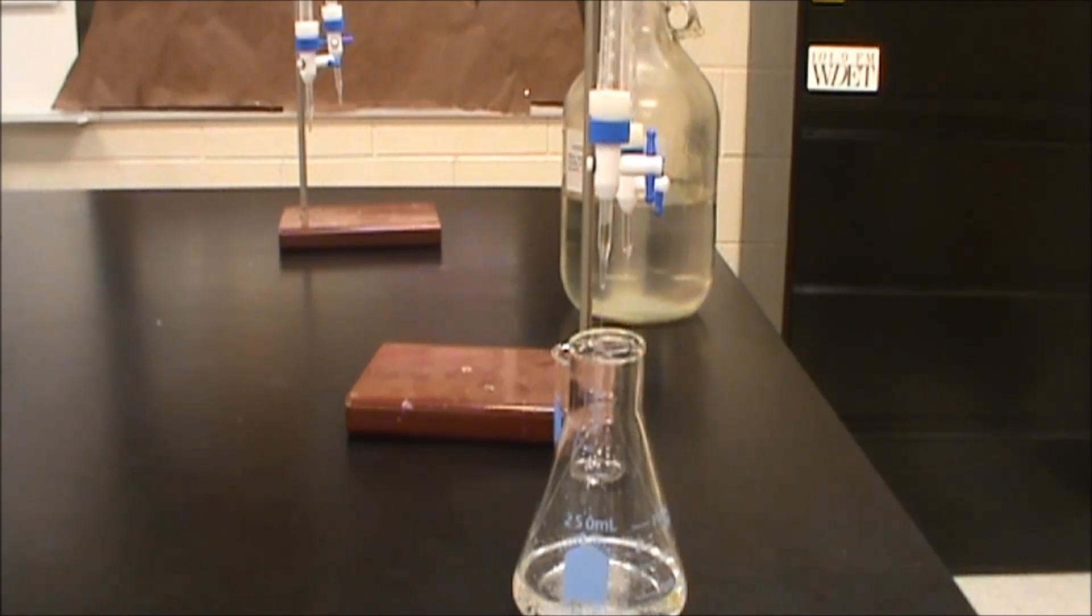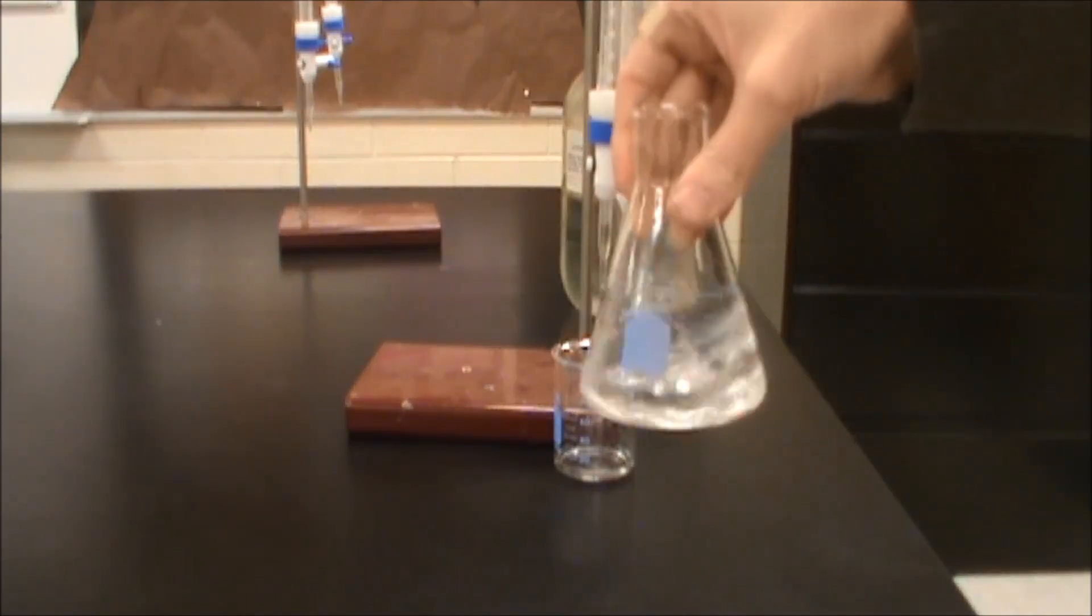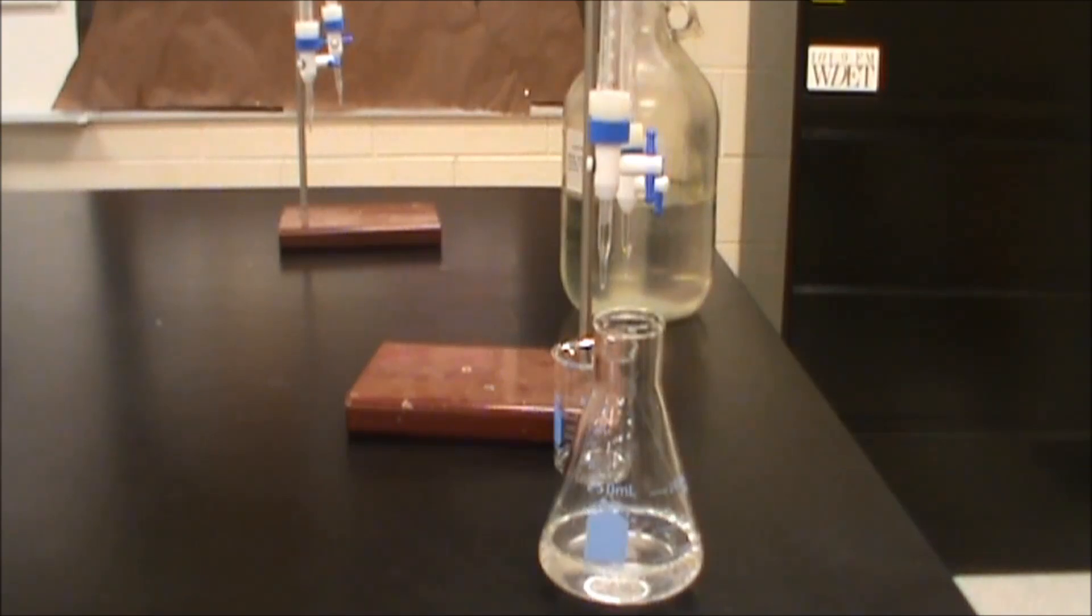Then we're going to refill that and we are going to start our titration and we're going to titrate our potassium hydrogen phthalate. 0.919 grams that are present in there in the presence of phenolphthalein.